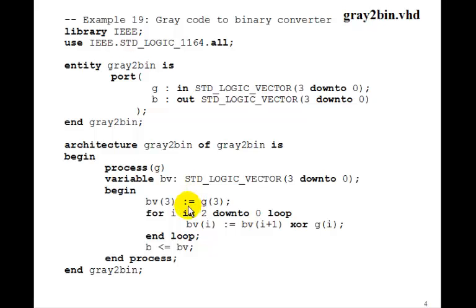The variable assignment operator is colon equal, so BV[3] gets G[3]. Then we say for i equal 2 downto 0 loop, BV[i] := BV[i+1] XOR G[i].